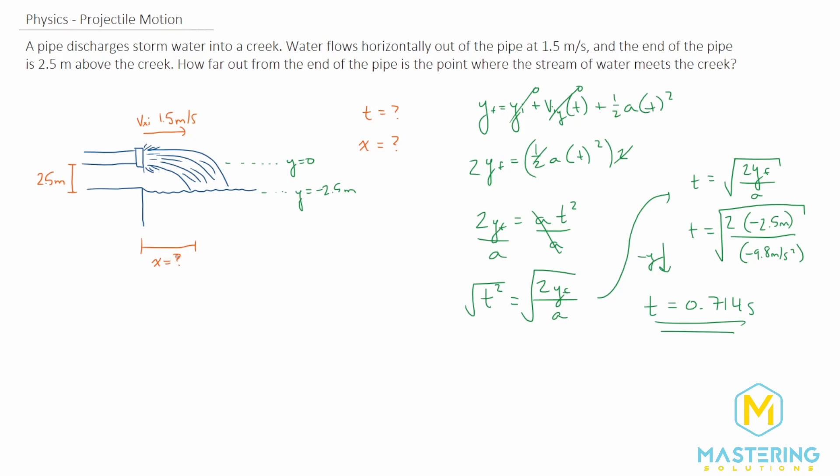Now that we have the time, we can figure out how far it went in the x direction. We already know how far it went in the y direction. To figure this out, we're going to use a velocity equation, which is the change in the distance over the change in time. We want to solve for the change in the distance, so multiply both sides by t. So we have the change in the distance equals the velocity times the time.